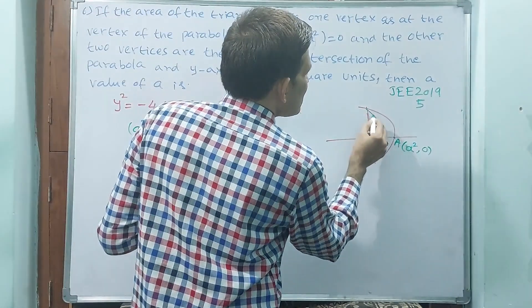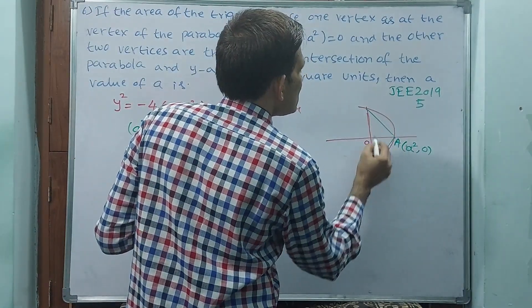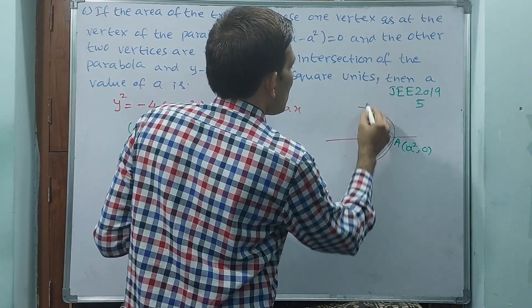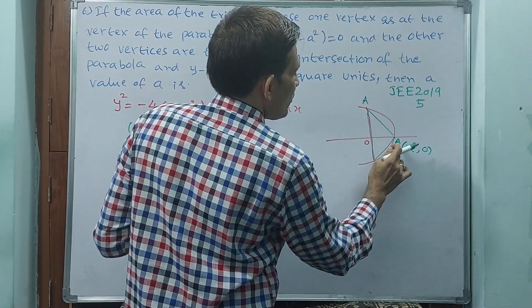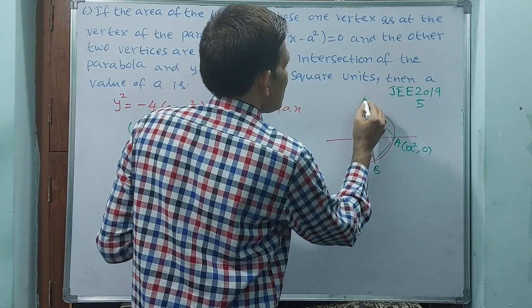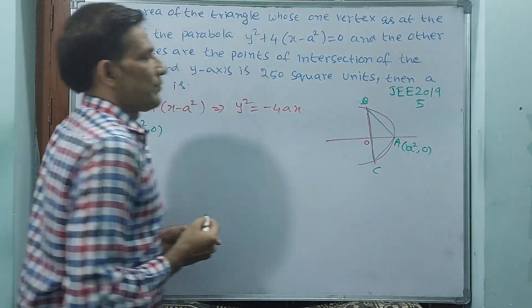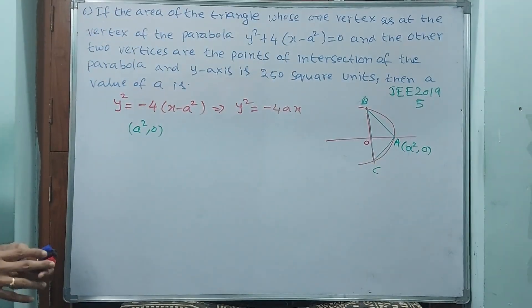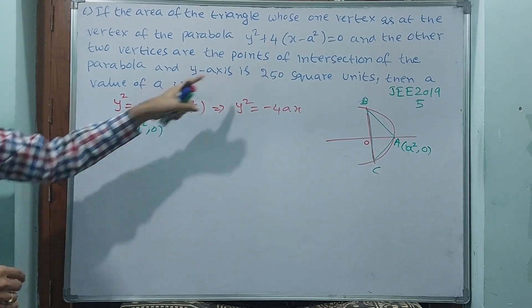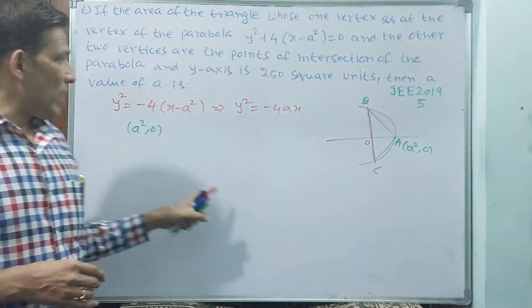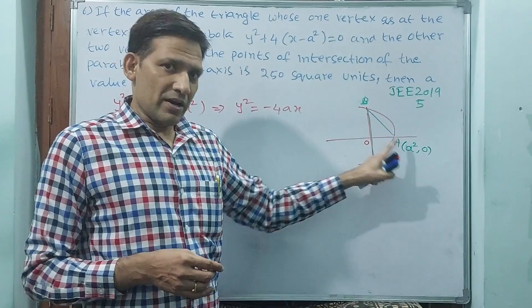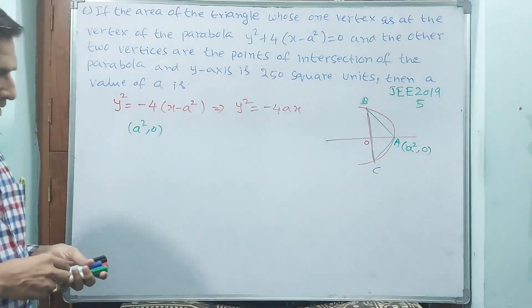That means remain two are b and c. If you take this as a, then you take this as b and c. That is the triangle. This area, they have given as 250 square units. We have to find a only. That means a square or a, we have to find. How you are going to find?